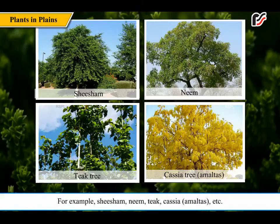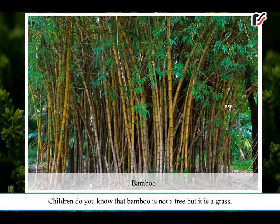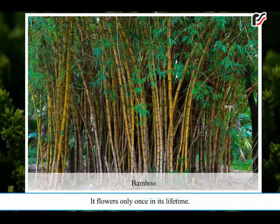For example, Shisham, Neem, Teak, Cassia, Amaltas, etc. Children, do you know that bamboo is not a tree, but it is a grass? It flowers only once in its lifetime.